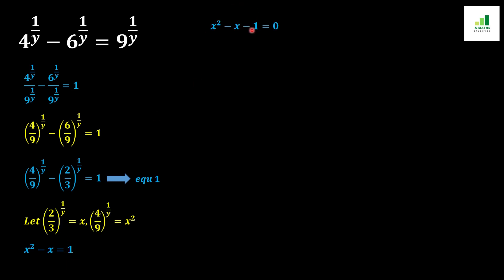Moving 1 to the other side of the equation converts it to minus 1, and we get the quadratic equation in standard form: x squared minus x minus 1 equals 0. We can see this is a quadratic equation, but it cannot be factorized, so we apply the quadratic formula.